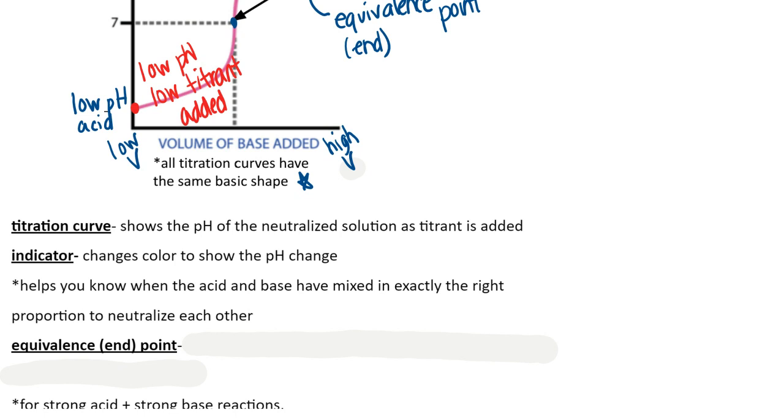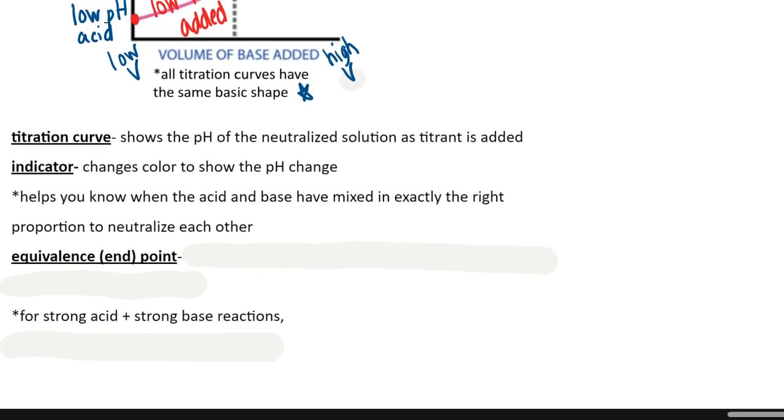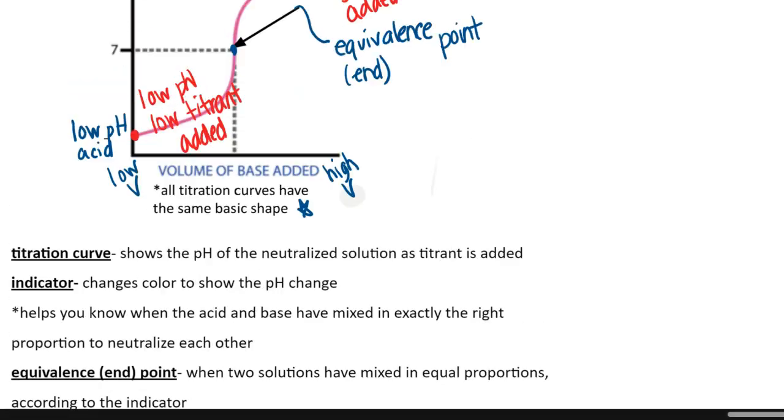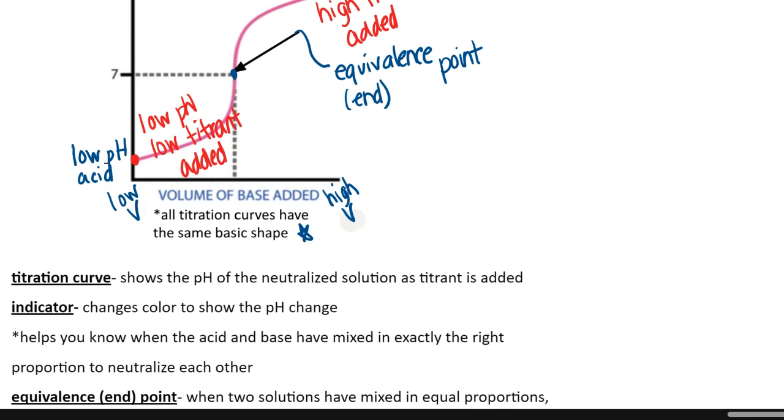Now that special part that we talked about is called the equivalence or the endpoint. This is when the two solutions have mixed in perfectly equal proportions, and we know that because of the indicator. You have reached the end point. It's really easy to accidentally add more and go past the endpoint, and that's what we're showing in this extra little end of the curve. But really the goal is to get the endpoint, even though it's in the middle.